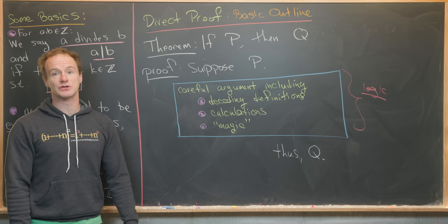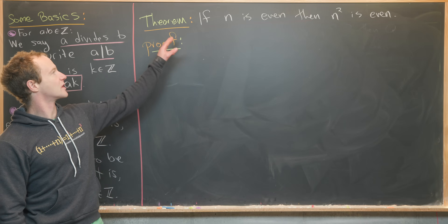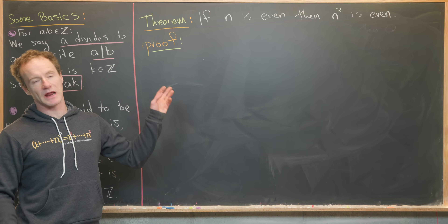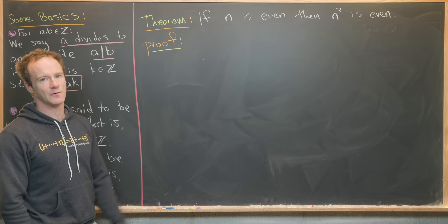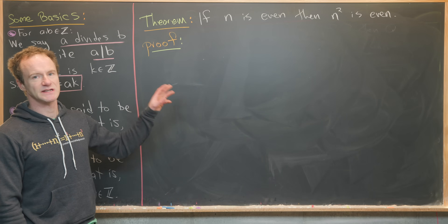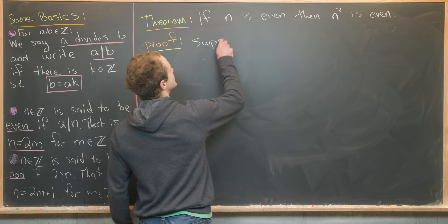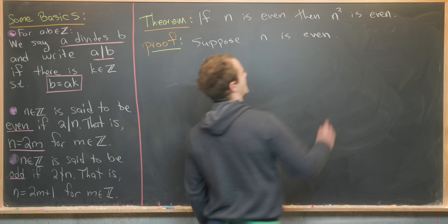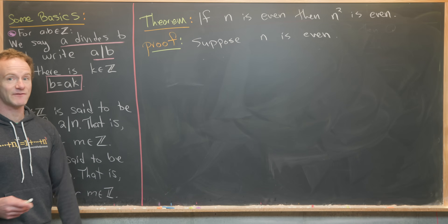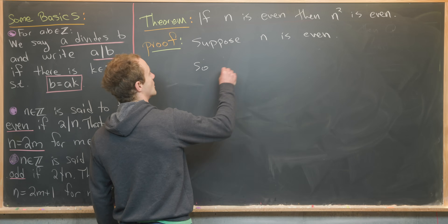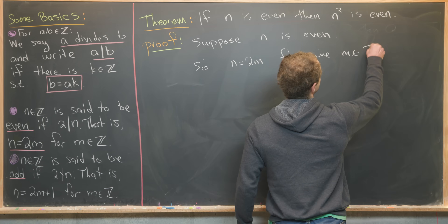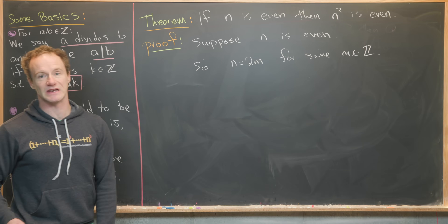For our first example, we're going to prove that if n is even, then n squared is also even. Our P statement is 'n is even' and our Q statement is 'n squared is even.' We're going to use the method of direct proof. Suppose that n is even — in other words, we're supposing that P is true. We decode this using the definition: n equals 2m for some integer m.